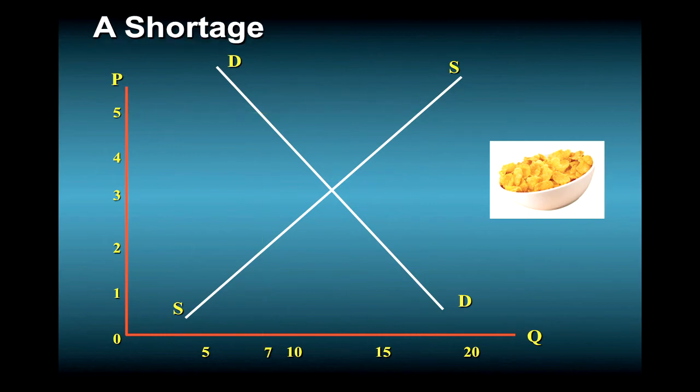Now, how about if instead of the price being too high, it starts out too low in the Corn Flakes market? Say, at 2 instead of 3. In this case, consumers will demand 15 million boxes, but firms will be willing to supply only 7 million boxes. In this case, we have a shortage of 8 million boxes, an excess of quantity demanded over quantity supplied.